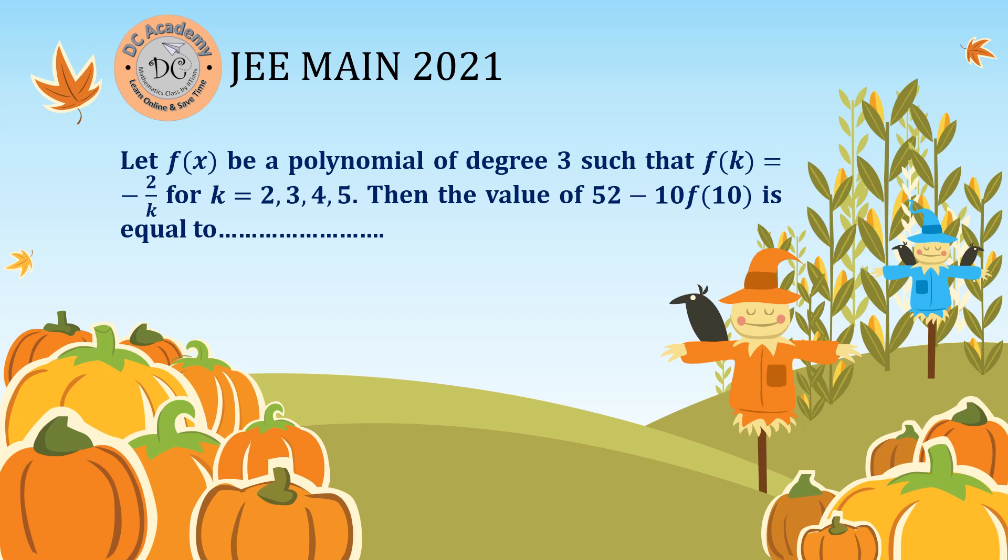Here, f(x) is a polynomial of degree 3, so it's a cubic polynomial, such that f(k) equals minus 2 by k for k equal to 2, 3, 4, 5. And we need to find out the value of 52 minus 10f(10).